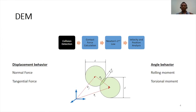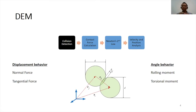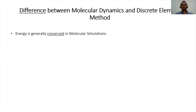The major difference between DEM and MD is that in MD we assume particles are mass points, so we cannot assign a normal force, tangential force, rolling moment, or torsional moment. In DEM, particles have a defined radius, so a normal force can be assigned; if they're sliding on top of each other we can have a tangential force; they can roll, or if they twist you can have a torsional moment. The angular behavior may need to be introduced depending on the model.